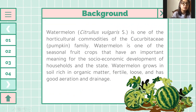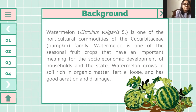Watermelon, or Citrullus vulgaris, is one of the horticultural commodities of the Cucurbitaceae, or pumpkin family. Watermelon is one of the seasonal fruit crops that have an important meaning for the socioeconomic development of households and the state. Watermelon grows in soil rich in organic matter, fertile, loose, and has good aeration and drainage.